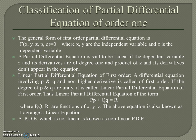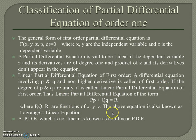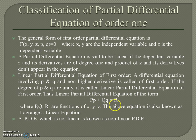A linear partial differential equation of first order involves p and q and does not contain higher derivatives. If the degree of p and q are unity, it is called a linear PDE of first order. The general form is Pp + Qq = R, where P, Q, and R are functions of x, y, and z. This equation is also known as Lagrange's linear equation. A PDE that is not linear is called a nonlinear partial differential equation.